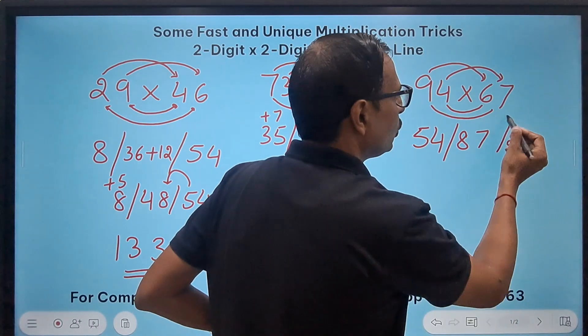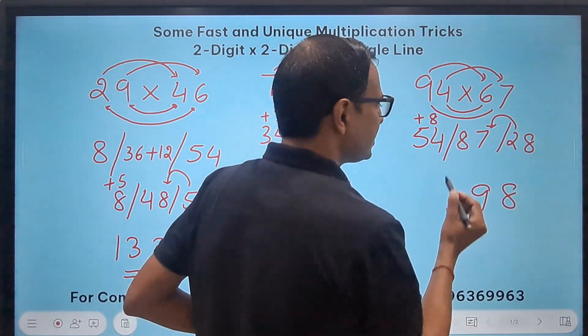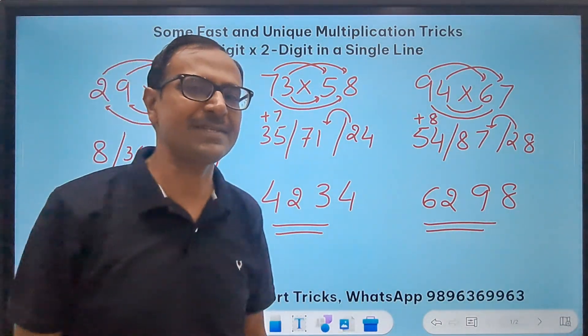Here we have 8. 2 added to 87 means 89. 8 added to this means 62. So 6298 is the product of 94 and 67.